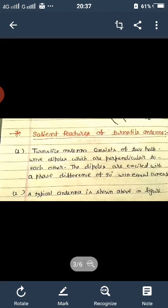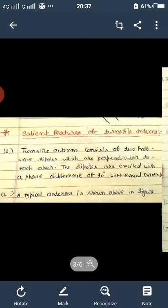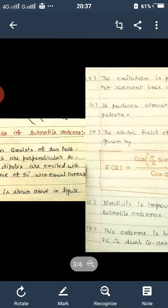The turnstile antenna consists of two half wave dipoles which are perpendicular to each other. The dipoles are excited with a phase difference of 90 degrees with equal currents. Typical antenna we have seen in the diagram, you may see once again.